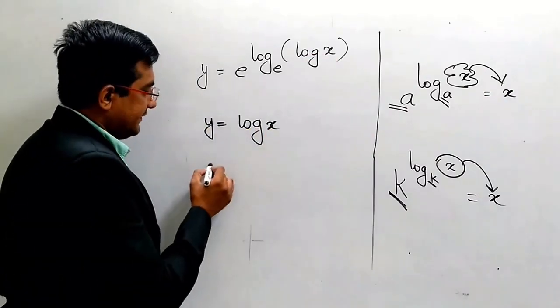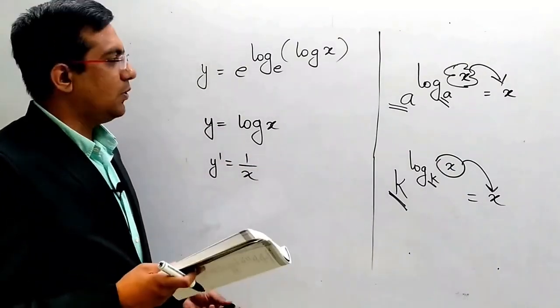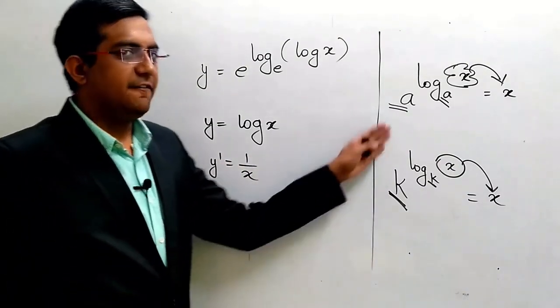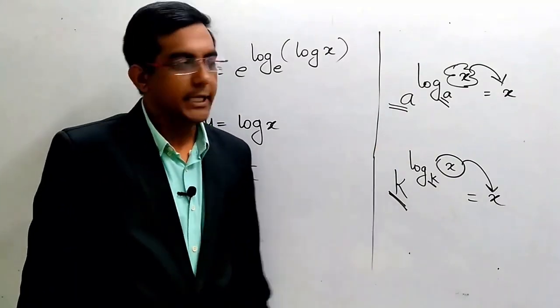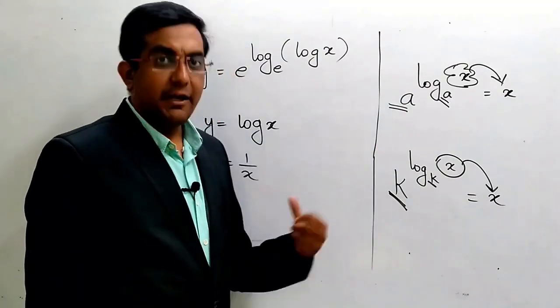So what is derivative of log x? That is 1 upon x. So we have seen the fundamental log property. If there is no doubt, please comment and have a note of it.